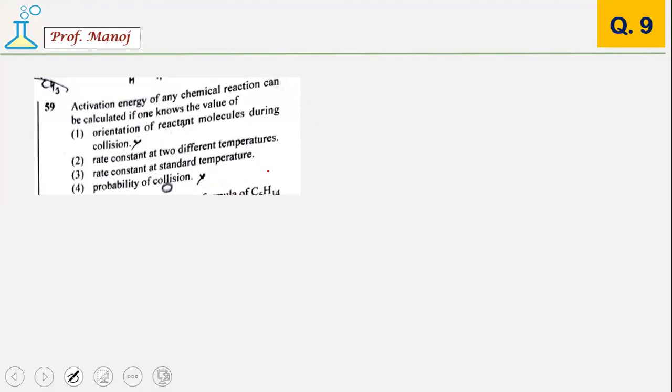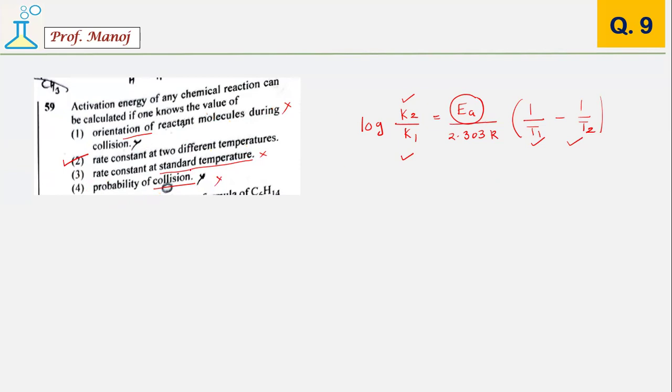Chemical kinetics question: activation energy of any chemical reaction can be calculated. If you recollect the Arrhenius equation, log K2 upon K1 equals Ea upon 2.303R, 1 upon T1 minus 1 upon T2. I can calculate activation energy if I know the rate constants at two different temperatures. Other options like orientation, collision, one single standard temperature won't help. The answer is 2.